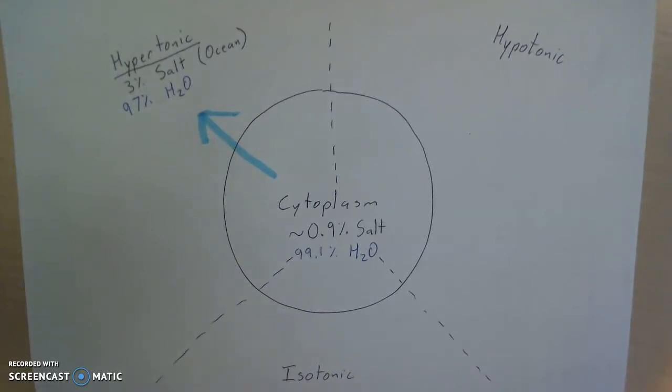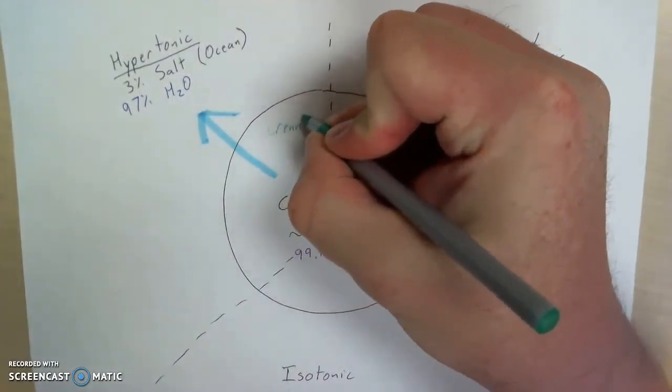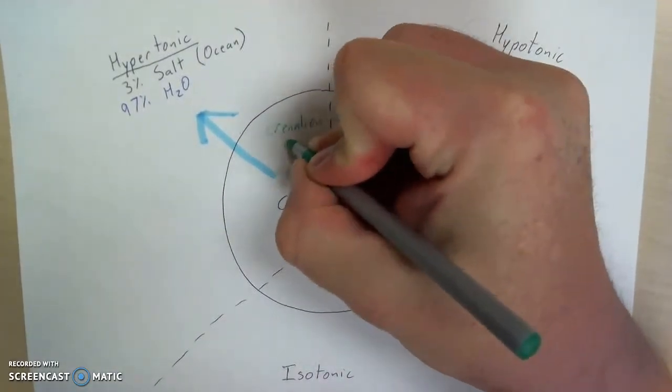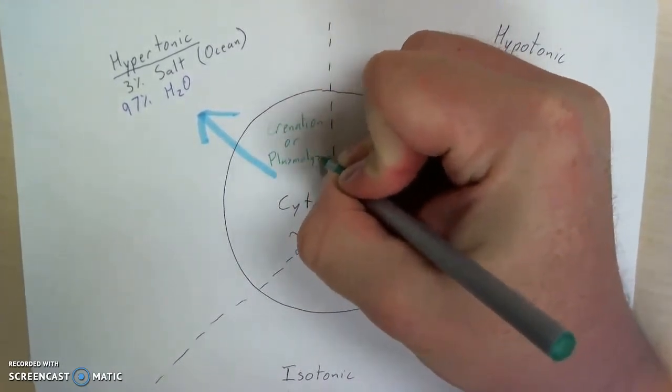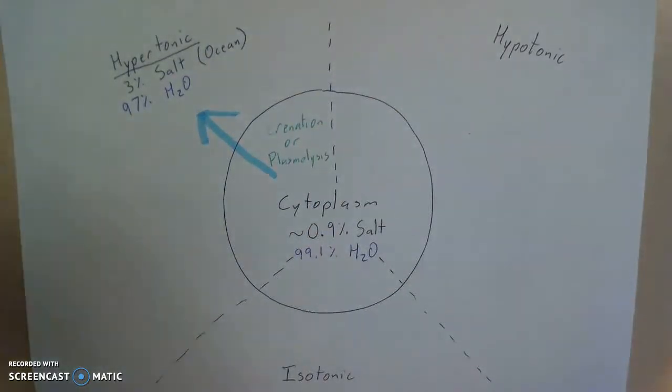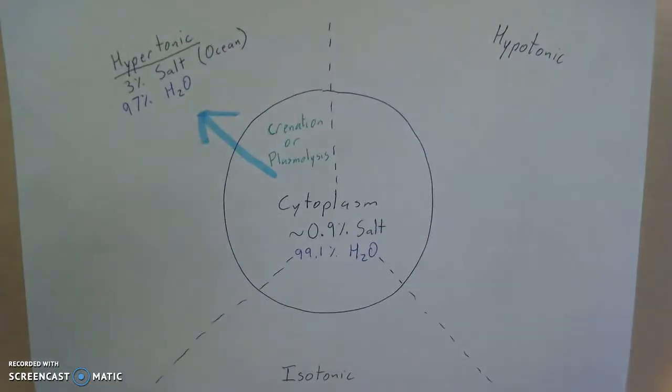This will cause the volume inside the cell to decrease. And this cell, over time, will undergo crenation, or another term you might hear is plasmolysis. And that just means that the cell is going to shrink. And it'll shrink and pull away from its cell wall. Alright, so that's what happens in a hypertonic environment.